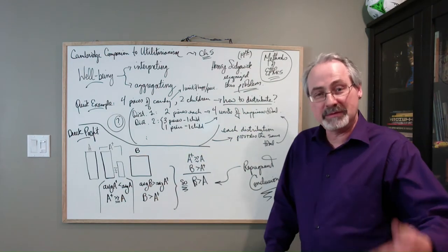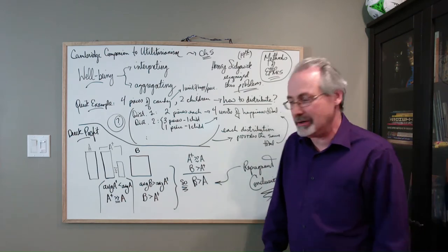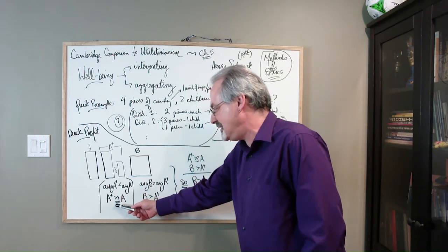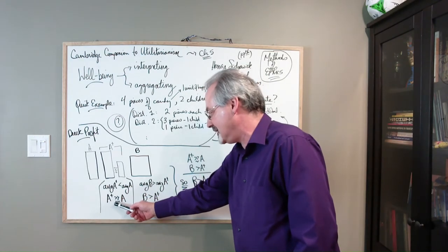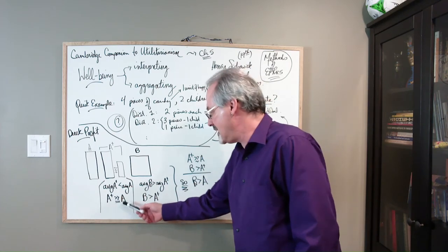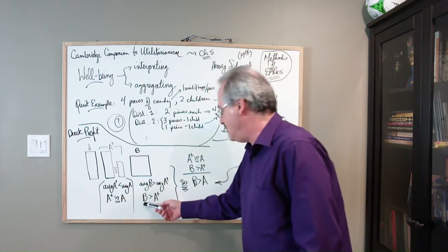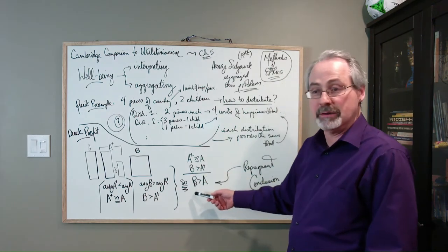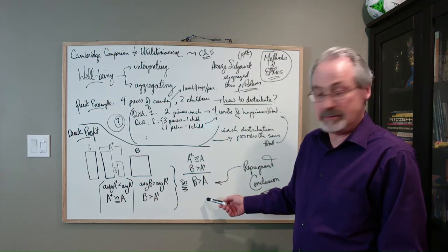Well, think about this as a little tiny logical argument. Well, if we said that A plus is at least better than, or maybe equal, but probably a little bit better than A. And B is a little bit better or greater than A plus, it would follow that B is better than A.